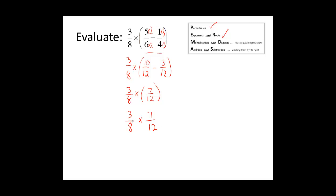We do not have any exponents and roots, so now we need to do our multiplication and division step. We have a multiplication problem: three-eighths times seven-twelfths. We see that we have a common factor in the numerator and denominator of 3. We can divide this numerator by 3 and that denominator by 3. Three divided by 3 is 1, and 12 divided by 3 is 4. There are no other common factors, so we multiply our numerators together: 1 times 7 is 7, and 8 times 4 is 32. So our answer is 7 over 32.